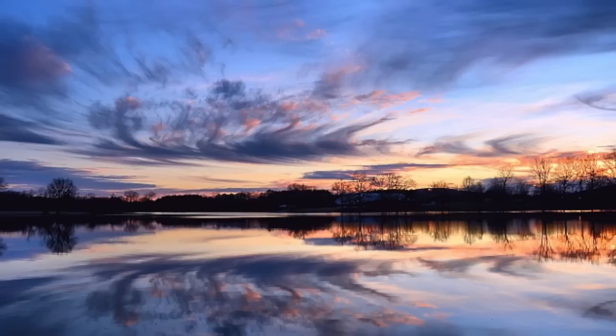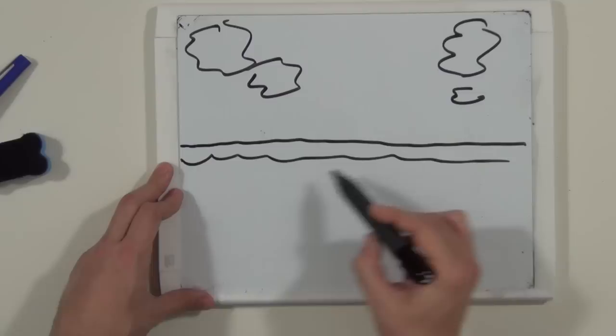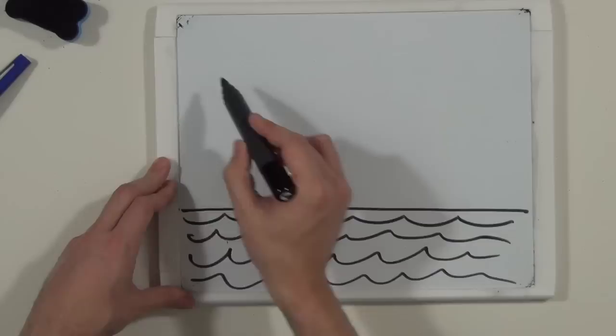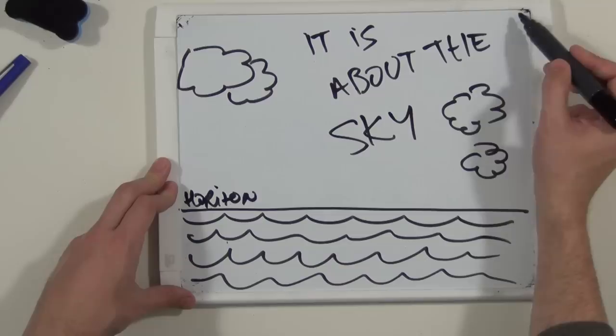Symmetry is not only defined by a vertical axis but also horizontal. The horizon is the best example of a symmetry axis, and if used in the middle of an image it becomes the subject. We can change the subject of an image by simply changing the location of the horizon. Moving the horizon down, we can say the image is about the sky. Moving the horizon up in the picture, we can say the photo is about the ground. Very simple but very effective.